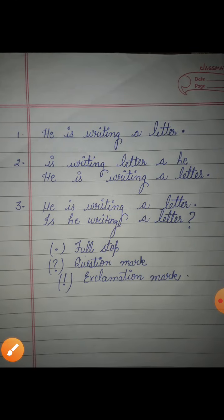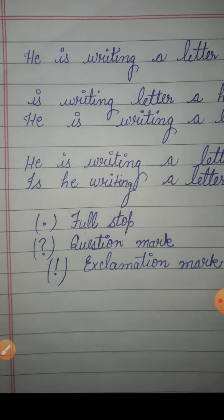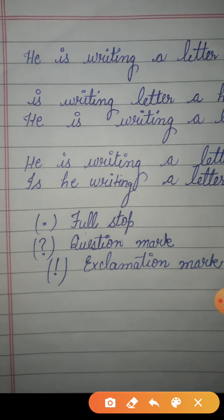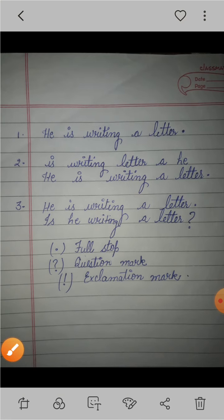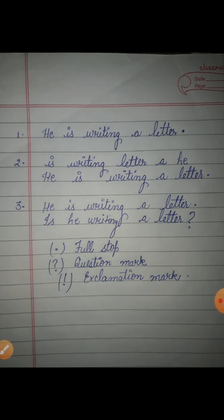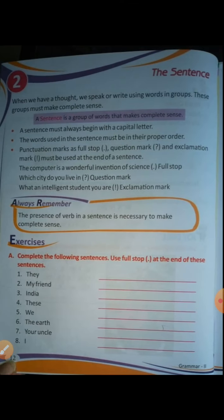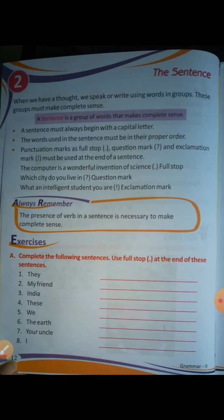Here you can see: full stop — this is the symbol of full stop. Here is the symbol of question mark. Here is the symbol of exclamation mark. So this is the explanation of your sentence chapter — your second chapter.